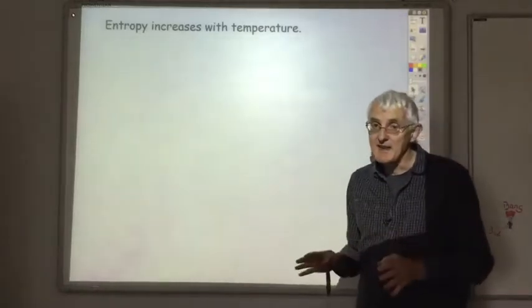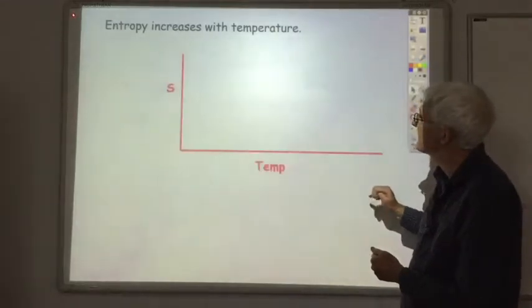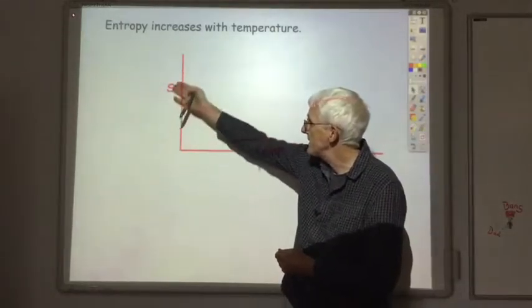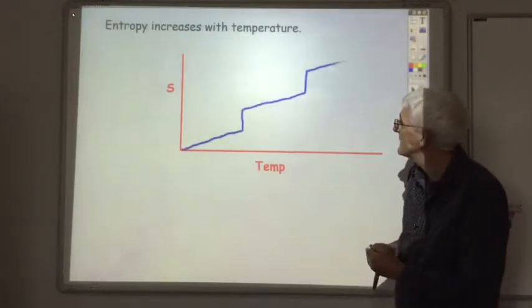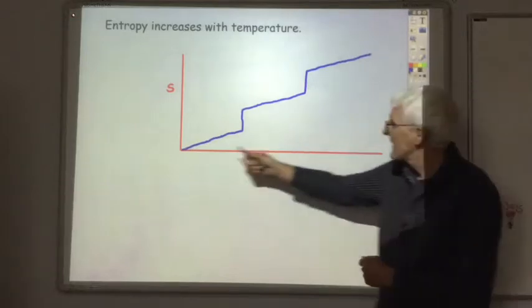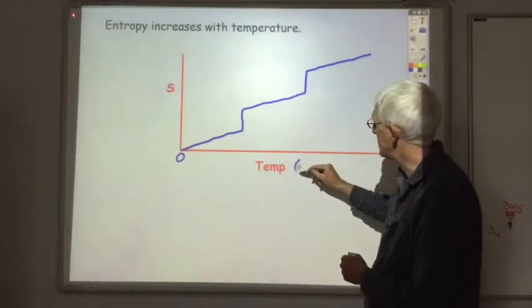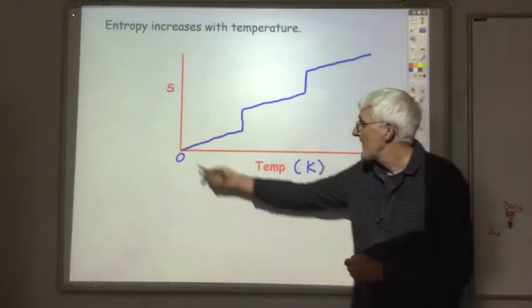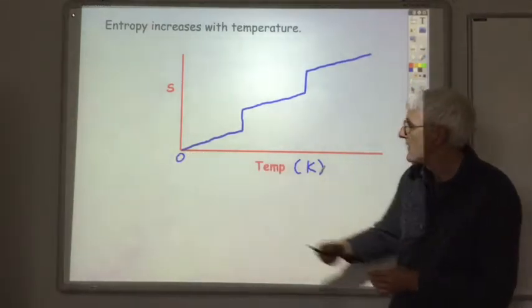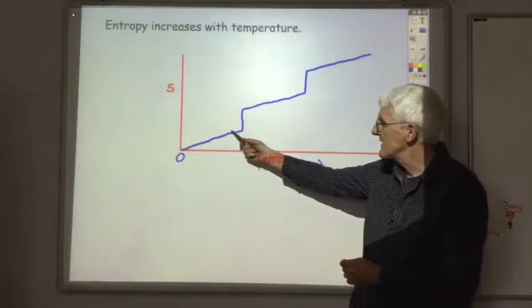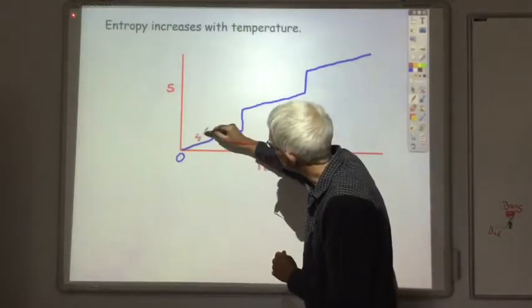Now, if we look at any substance, we always find that the entropy increases with temperature. And if we plot entropy against temperature, we'll always get a graph that looks something like this. So at a temperature of zero, and this is zero degrees Kelvin, everything has an entropy of zero. It's everything that's totally ordered. But as you heat up the substance, particles in the solid start to shake around a bit more.